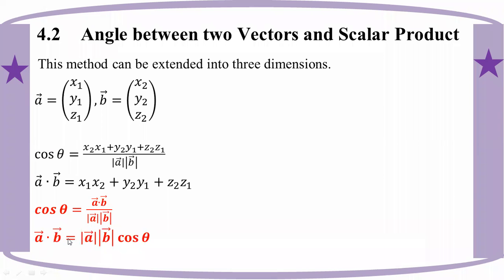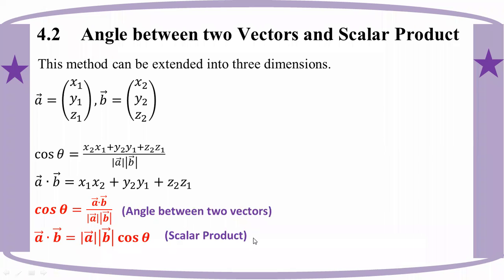Theta A dot theta B equals modulus of theta A times modulus of theta B times cos theta. So cos theta equals A dot B divided by modulus of A times modulus of B. That is how the scalar product is defined: A dot B equals |A||B|cos theta.